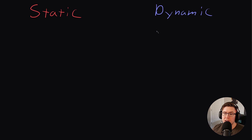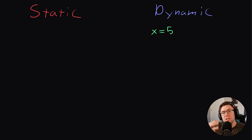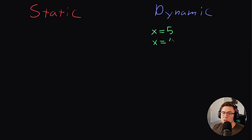I teach a lot of Python code, so let's start with how Python approaches typing. Python is a dynamically typed language. So when you create a variable in Python — let's say x — and you set it to a value of say the number five, that variable x happens to store an integer type. But at any point in the program, we can change the type that x stores. We could change it to say the string five.